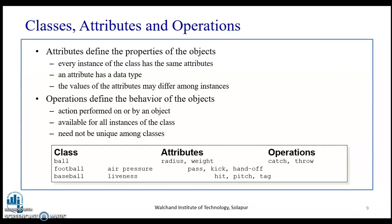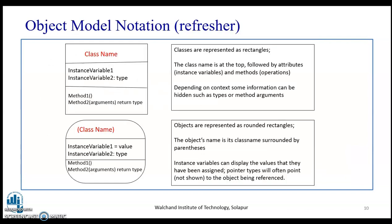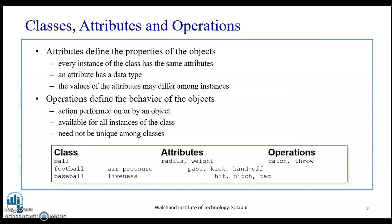Now let us understand the terminologies: attributes and operations. Attributes define the properties of the object. Every instance of the class has the same attributes — they are essentially the properties. An attribute has a data type, and the values of the attributes may differ among instances. Operations define the behavior of objects. Actions performed on or by an object are basically the operations. They are available for all instances of the class and need not be unique among the classes.